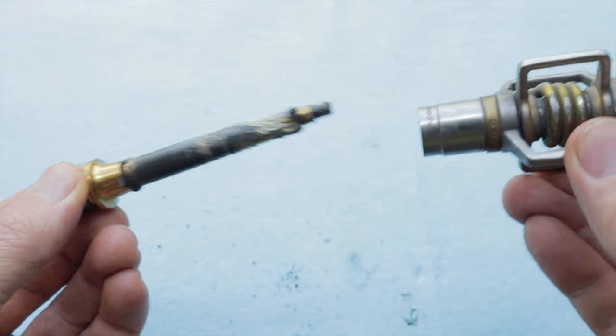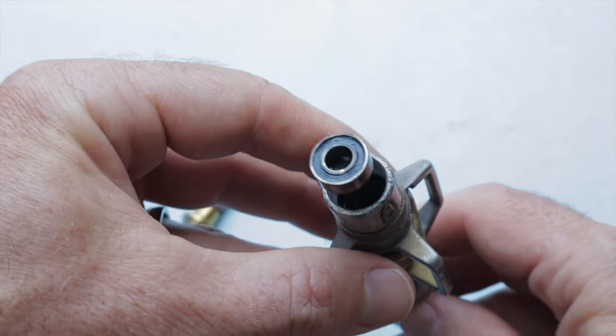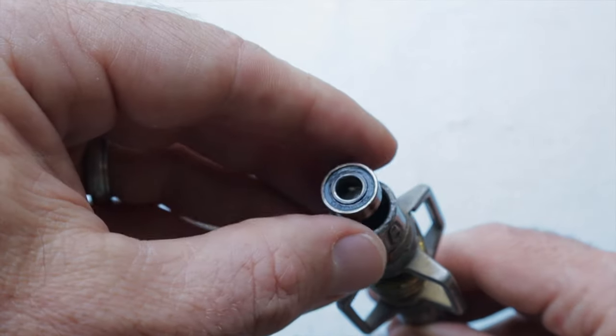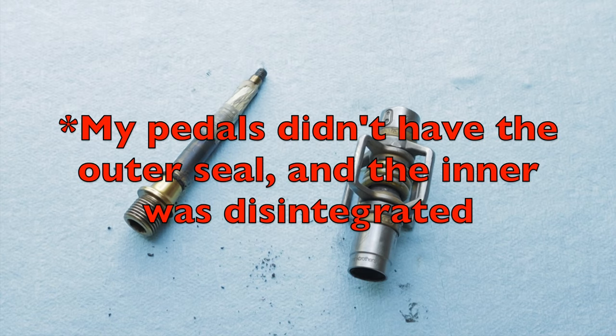The cartridge bearing will be free to remove. It should slide right out, but if not, you can pop a 6mm Allen wrench through from the other side to push it out. With the pedal body off, you can then remove the inner and outer seal from the spindle.